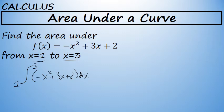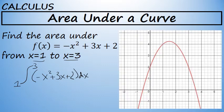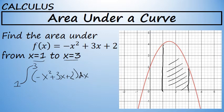Although not necessary, the graph of this function looks like this, and this integral will find the area between the curve and the x-axis from x equals 1 to x equals 3. We're finding the area of this shaded region. We can estimate what this area will be by counting the number of square units between the curve and the x-axis.